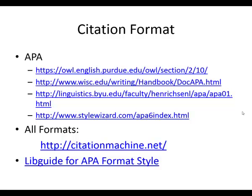Another question I get is about APA formatting. Here are four different places to go for APA formatting — they will help lead you through it. The one on the bottom, Citation Machine: if you have an article, a DVD, or something you want to use in your paper, all you have to do is type in the information you have and it will give you back the correct citation format. There is also a LibGuide available on the library website for APA formatting that you might want to consult.